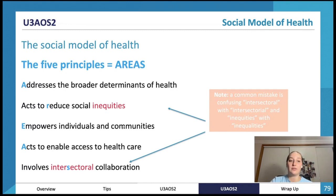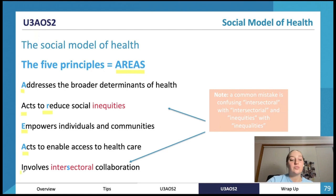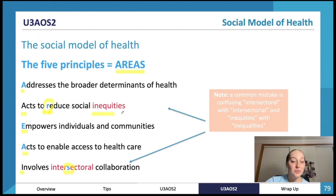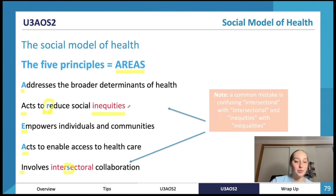Now looking at the social model of health: there are five principles called AREAS — a great acronym. A: addresses the broader determinants of health. R: acts to reduce social inequities. E: empowers individuals and communities. A: acts to enable access to healthcare. S: involves intersectorial collaboration. Common mistakes include saying 'intersectoral' instead of 'intersectorial', and confusing 'inequities' with 'inequalities' — it's inequities, not inequalities.